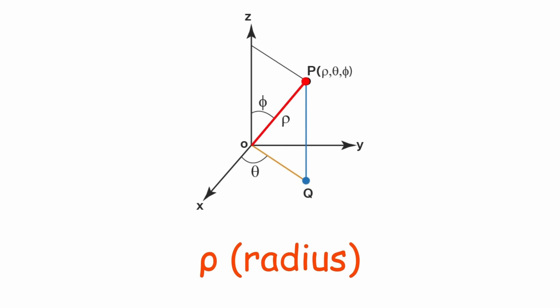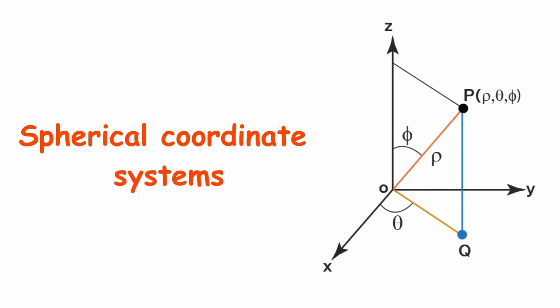Theta, azimuthal angle, same as in polar and cylindrical coordinates, measured in the x, y plane. Phi, elevation angle, measured from the z-axis, it controls the height of the point.